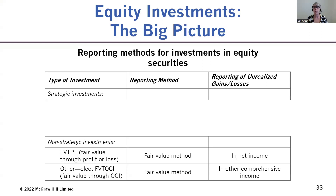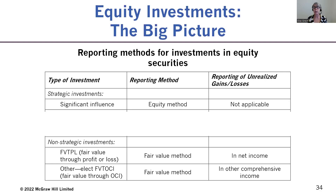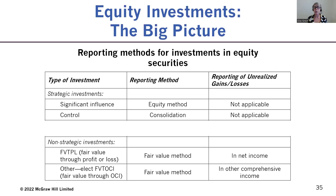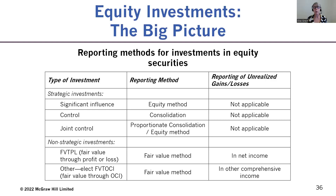We'll be covering reporting under both methods in Chapter 2. For strategic investments, the reporting method depends on the level of investment. There are three general levels: first, significant influence, for which the equity method must be used — covered in Chapter 2. Second, when the investment indicates the investor has control, the strategic investment is reported using consolidation, covered in Chapters 3 to 8. Finally, joint control is divided into two subcategories: joint ventures, which require the equity method, and joint operations, which require proportionate consolidation. We won't be covering joint control until Chapter 9.